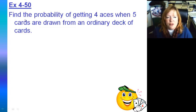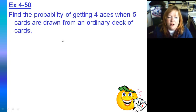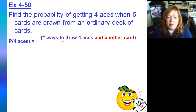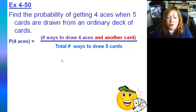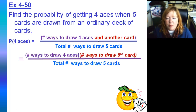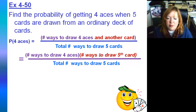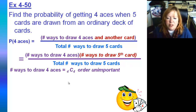Here's our first example: find the probability of getting four aces when five cards are drawn from an ordinary deck of cards. When you're figuring probability, I like to write things out in words. The probability of four aces is going to be the number of ways to draw four aces and another card, all divided by the total number of ways to draw five cards. This is an AND, which means we're going to be multiplying — the number of ways to draw four aces times the number of ways to draw the fifth card.